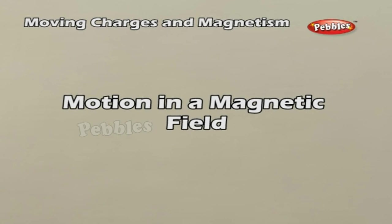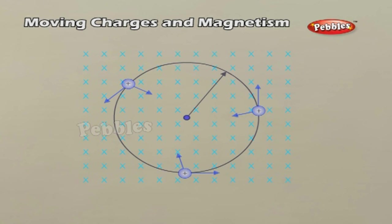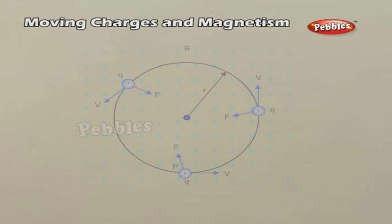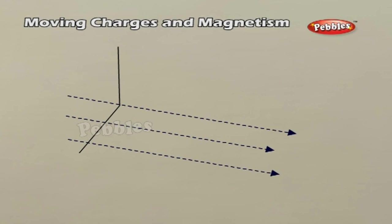Motion in a Magnetic Field. We shall consider the motion of a charged particle in a uniform magnetic field. First, consider the case of V perpendicular to B. The perpendicular force Q(V × B) acts as a centripetal force and produces a circular motion perpendicular to the magnetic field. The particle will describe a circle if V and B are perpendicular to each other.